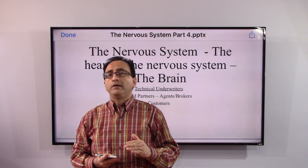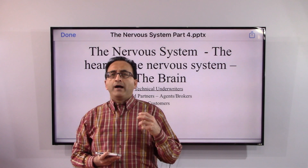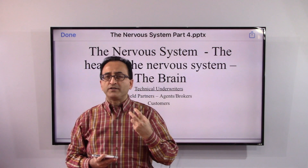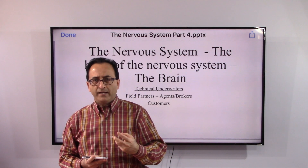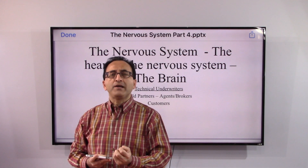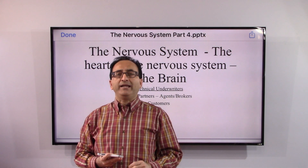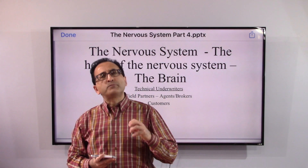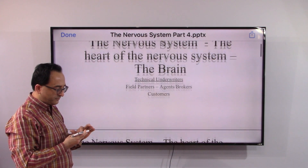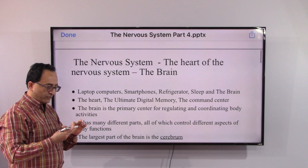Voluntarily or involuntarily, things are happening. Anything we see or perceive, things happen inside our nervous system, inside our brain — the billions of tiny neurons, the neurotransmitters from dendrites and beyond. So let's put our heart into understanding the brain. In this video we will be focusing on the brain.